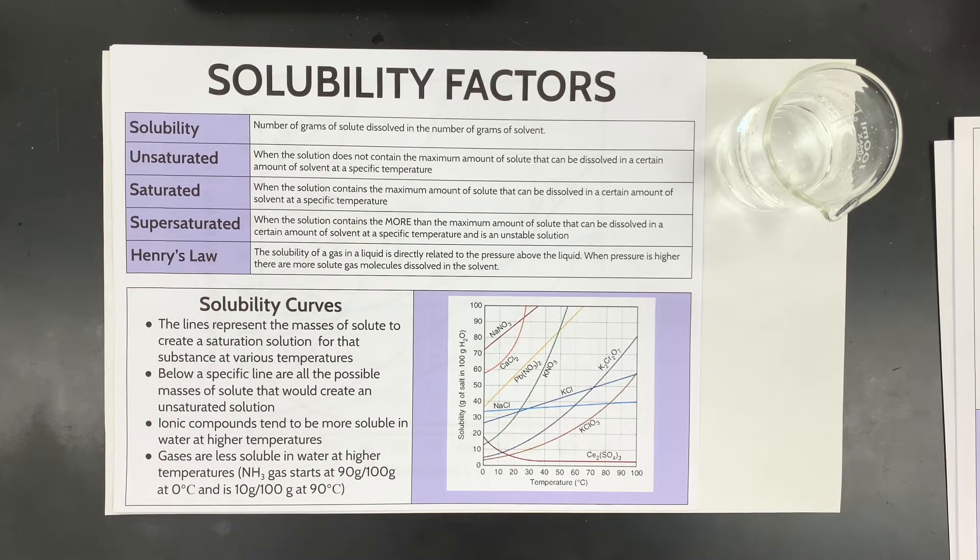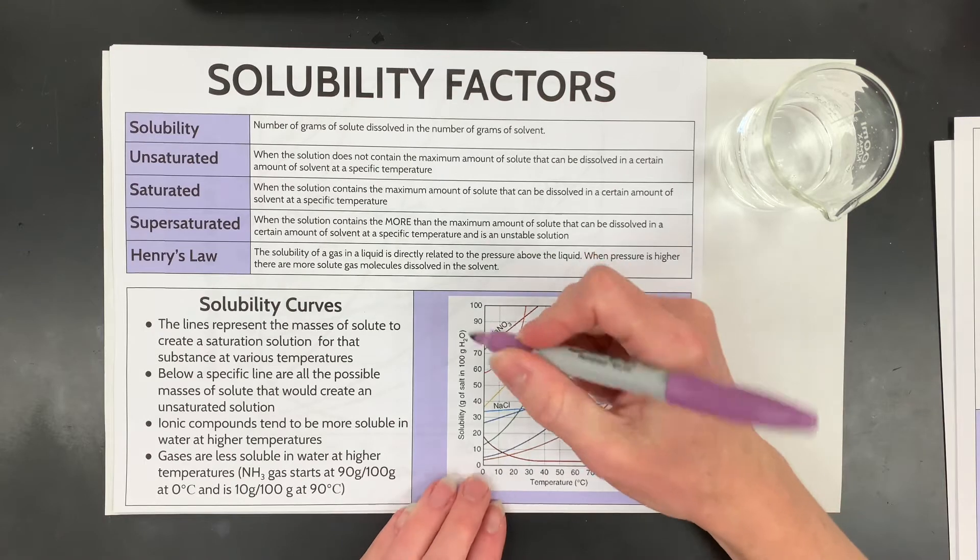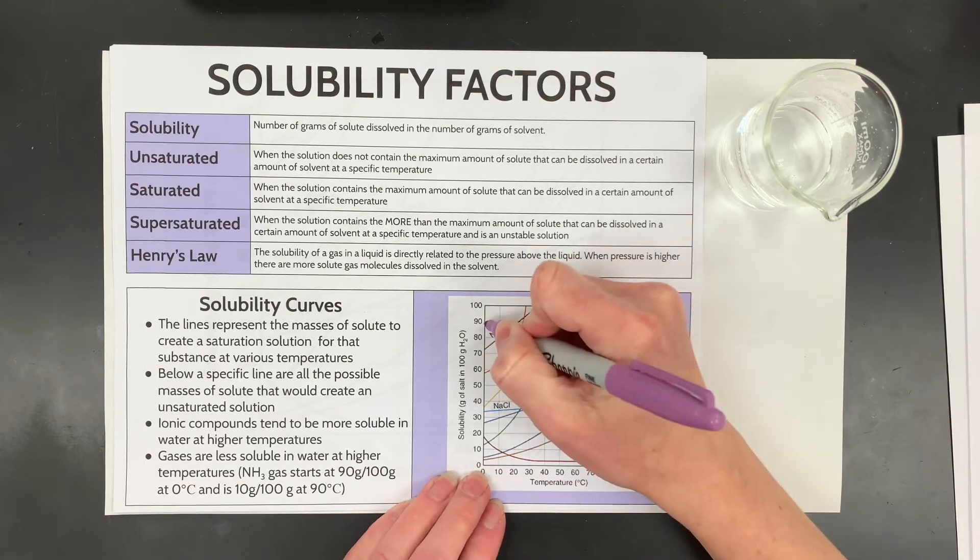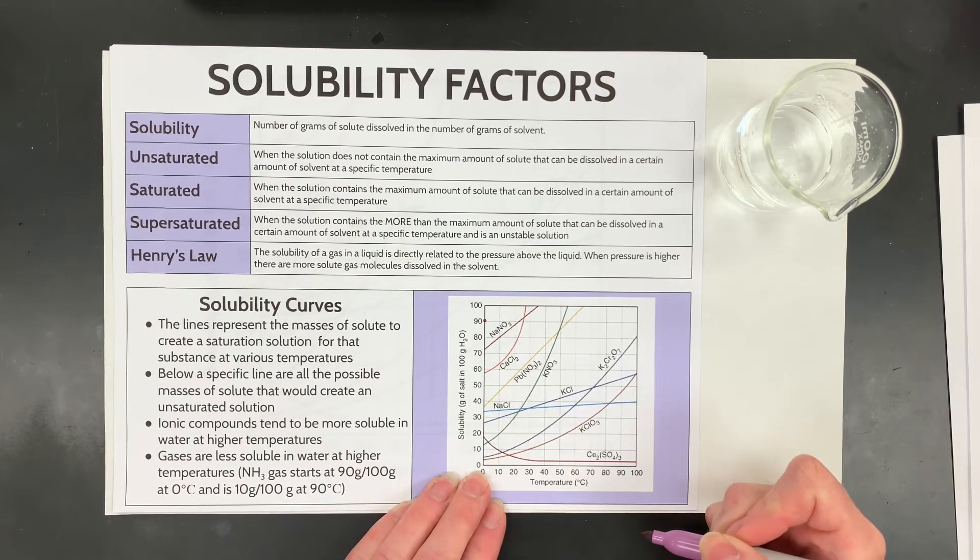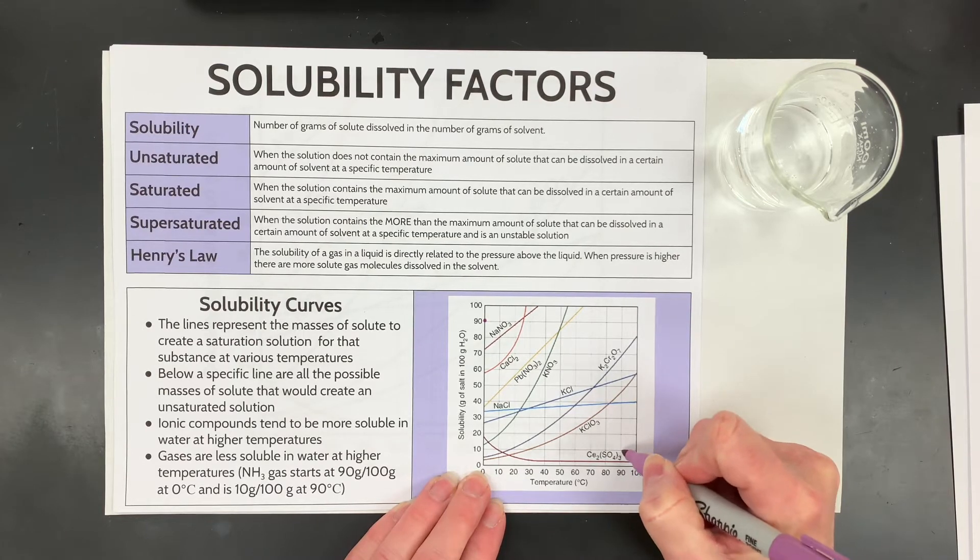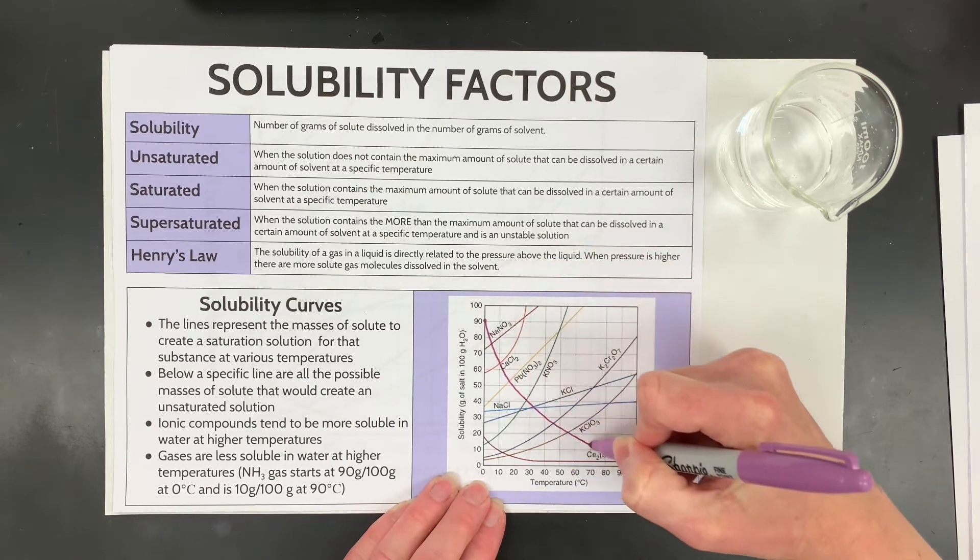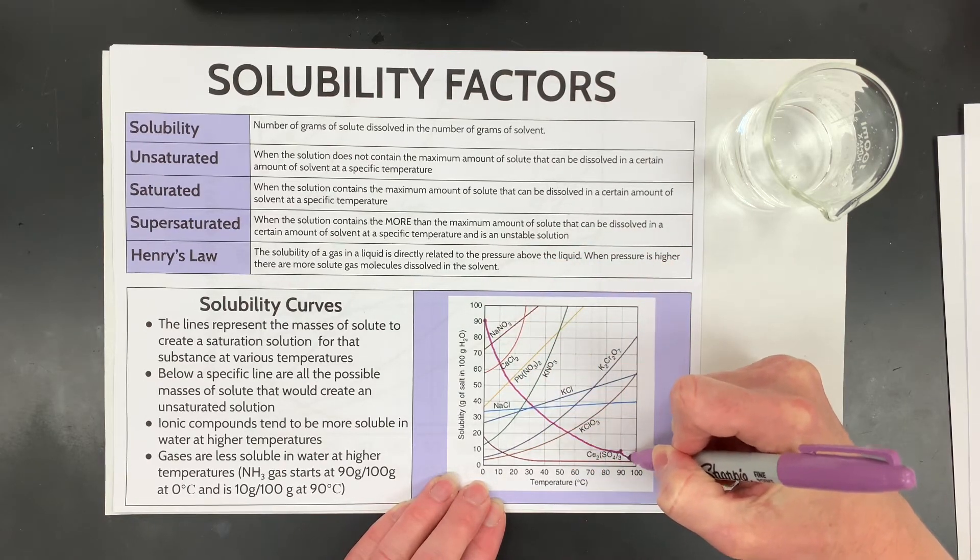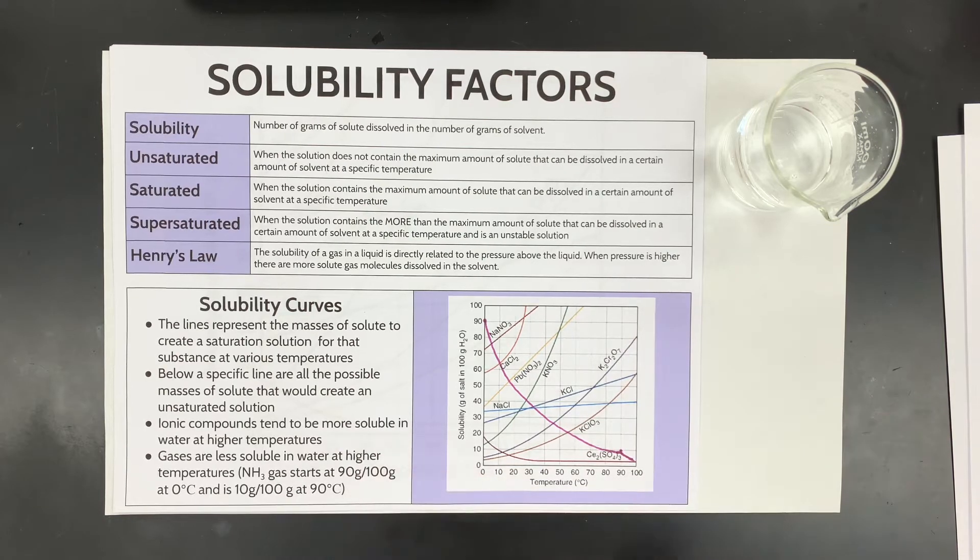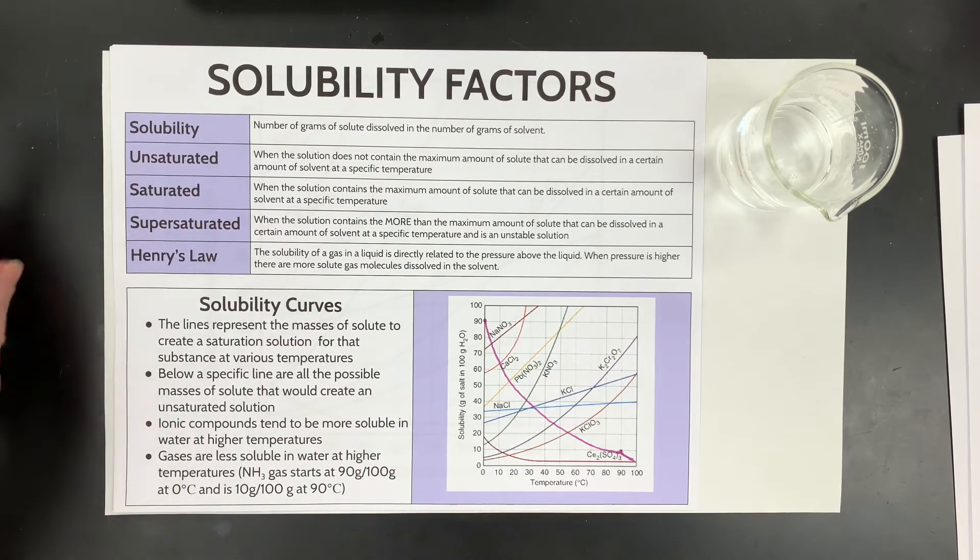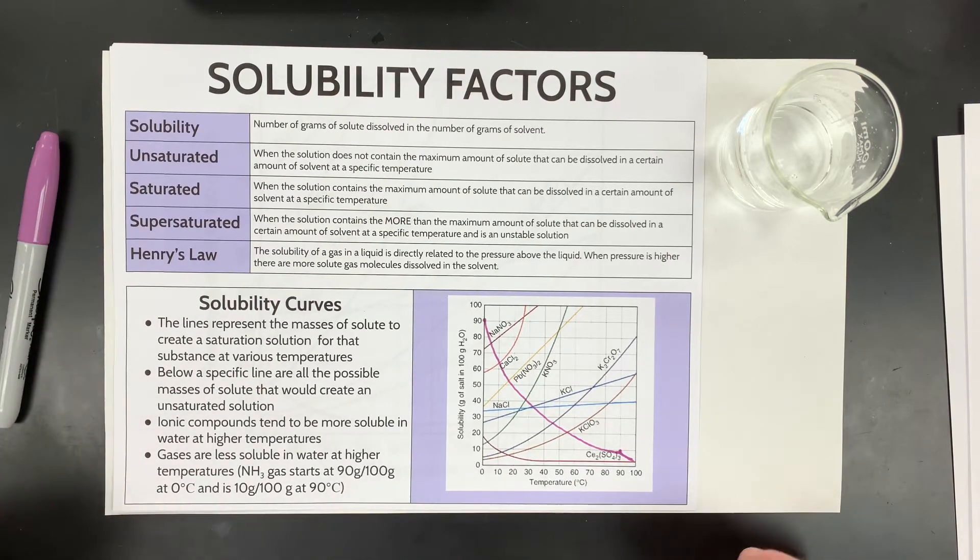So I'm just going to draw kind of one gas onto here and that's ammonia gas, and it starts here and then by the time you get to 90 degrees it's only soluble by about 10 grams. So I'm just going to kind of gently add that when it looks like this. And so gases tend to be less soluble as temperature goes up, which I think kind of matches with some common sense that you have hopefully, that you kind of just noticed in your life.